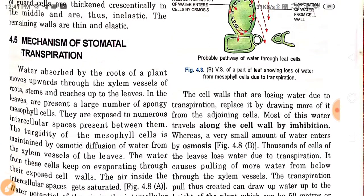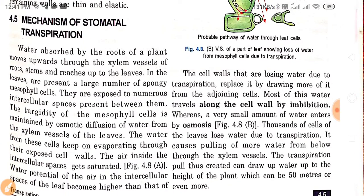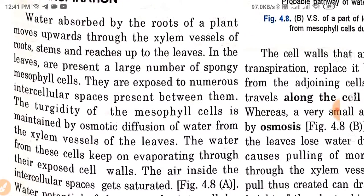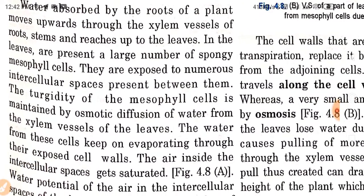Now we read about the mechanism of stomatal transpiration — how transpiration takes place through stomata. Water absorbed by the roots of a plant moves upward through the xylem vessels of roots and stem and reaches the leaves. This is called the ascent of sap. In the leaves there are a large number of spongy mesophyll cells.